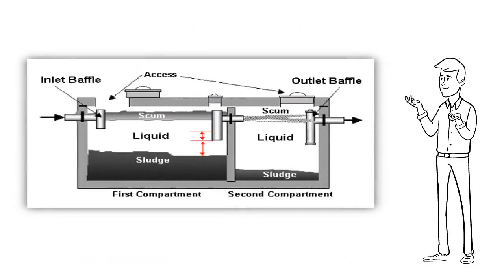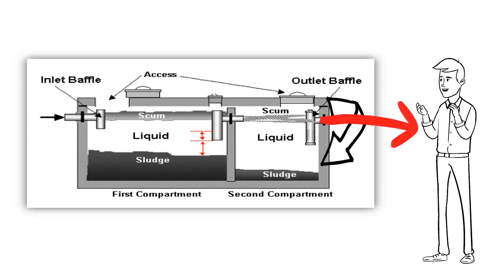Your septic tank is where all the waste water and gray water from your home is stored. There are two compartments, one where the solid waste can settle out and the other side where the liquid waste can exit into the leach field.